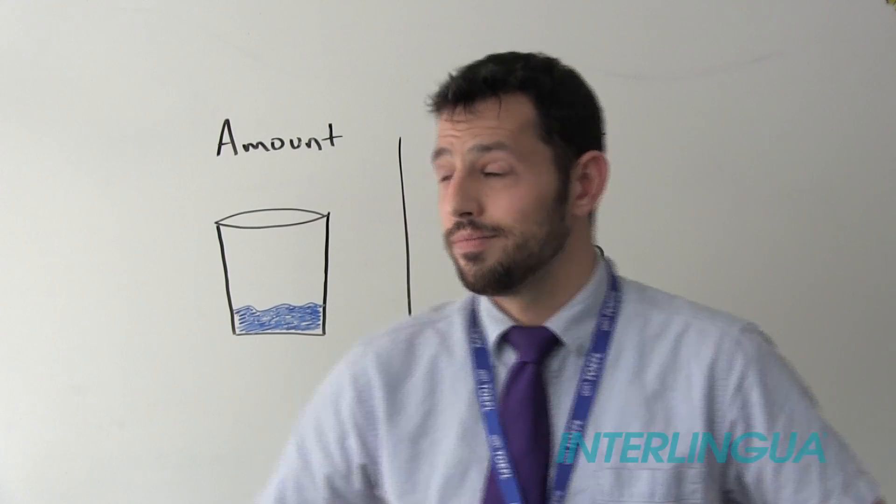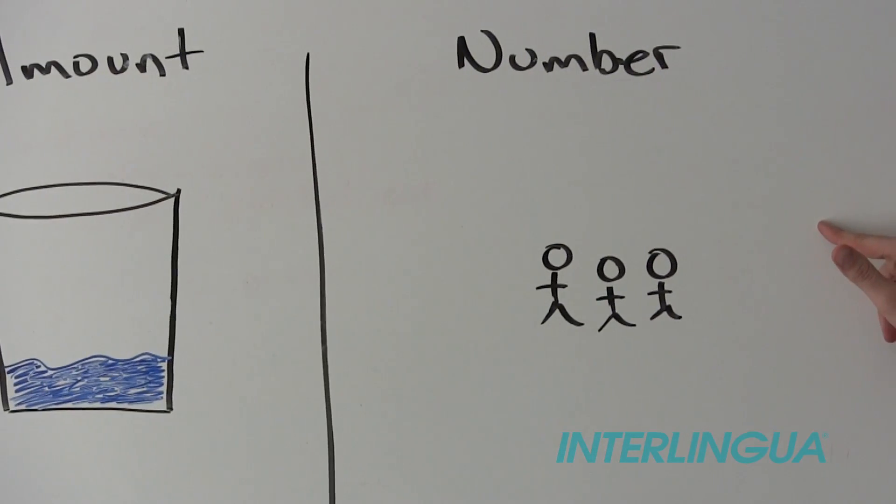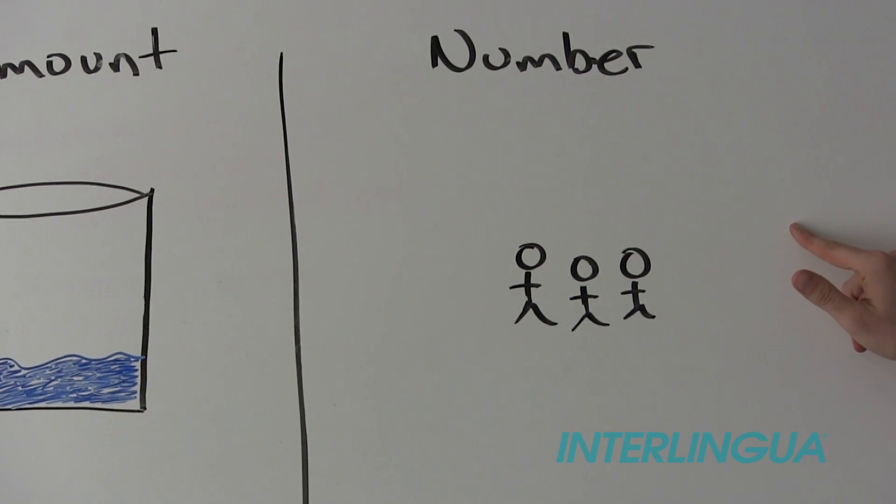Which one is correct? The number. The number of students running late is growing every day is correct. Why?